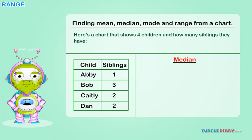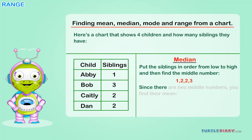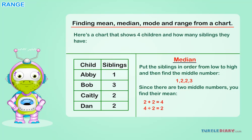Median: put the siblings in order from low to high and then find the middle number. 1, 2, 2, 3. Since there are two middle numbers, you find their mean. 2 plus 2 equals 4. 4 divided by 2 equals 2. 2 is the median.